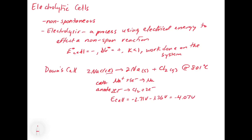To make sodium metal and chlorine gas, we have to apply a minimum of 4.07 volts. Generally you have to apply even more — it's called an overpotential — to get the rate of the reaction fast enough to actually produce the sodium and chlorine.